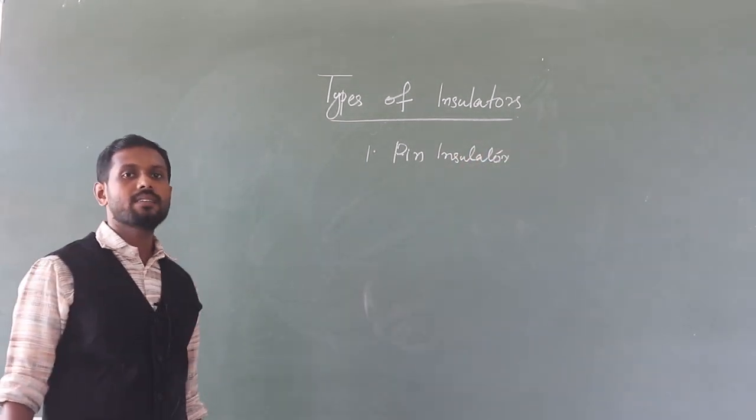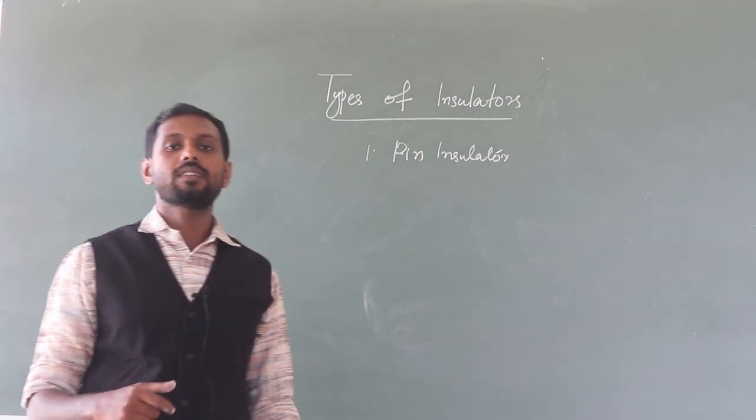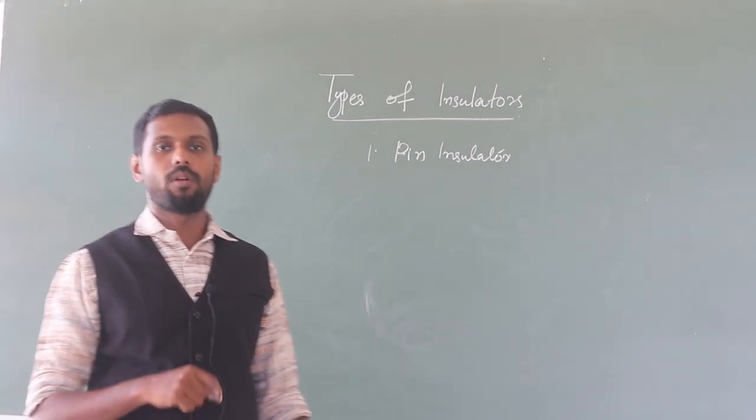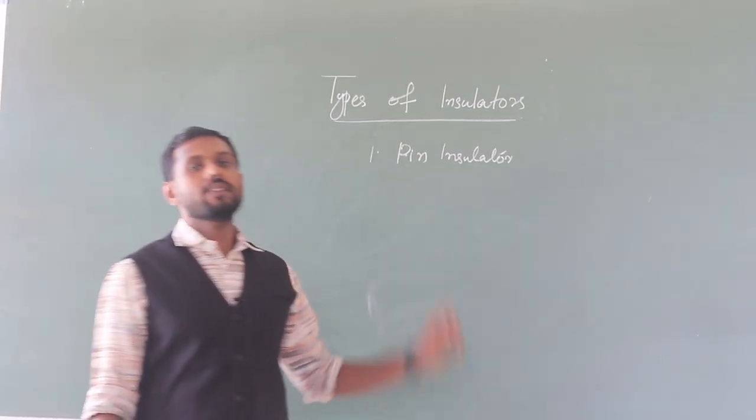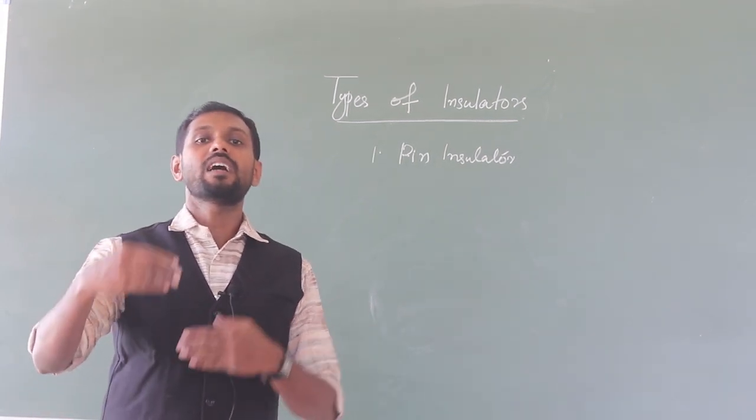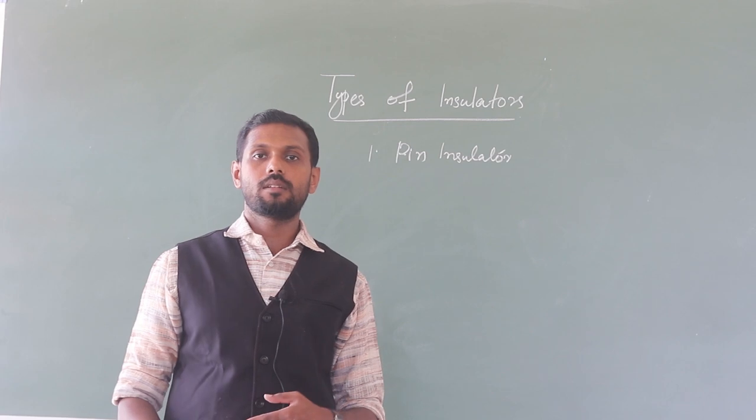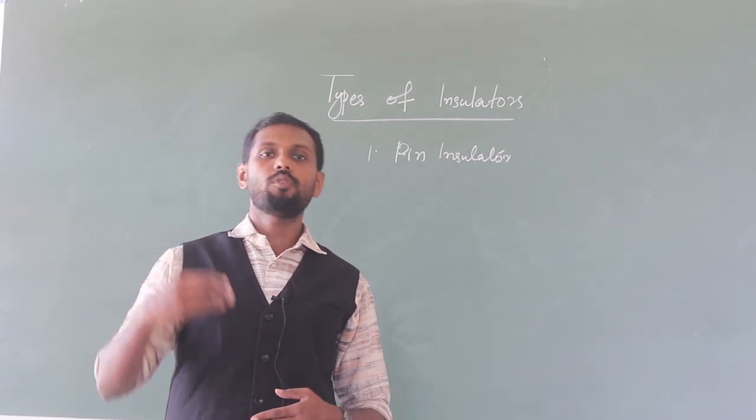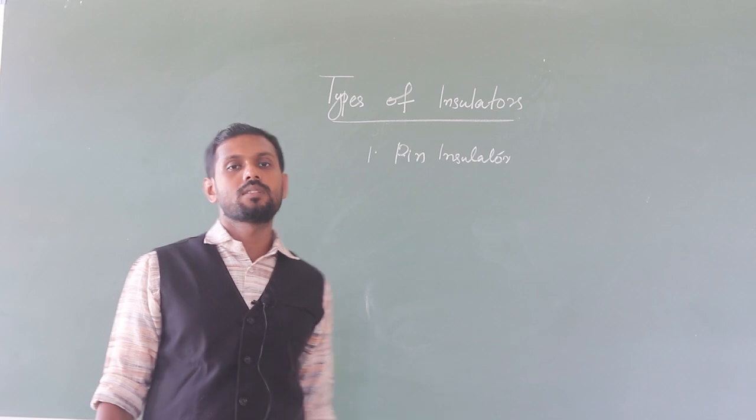This pin insulator is secured or connected to the cross arm of the support. Mainly in the case of pin insulator, it is designed for a voltage rating up to 33 kilovolts, and above 33 kilovolts this pin type insulator is not used.